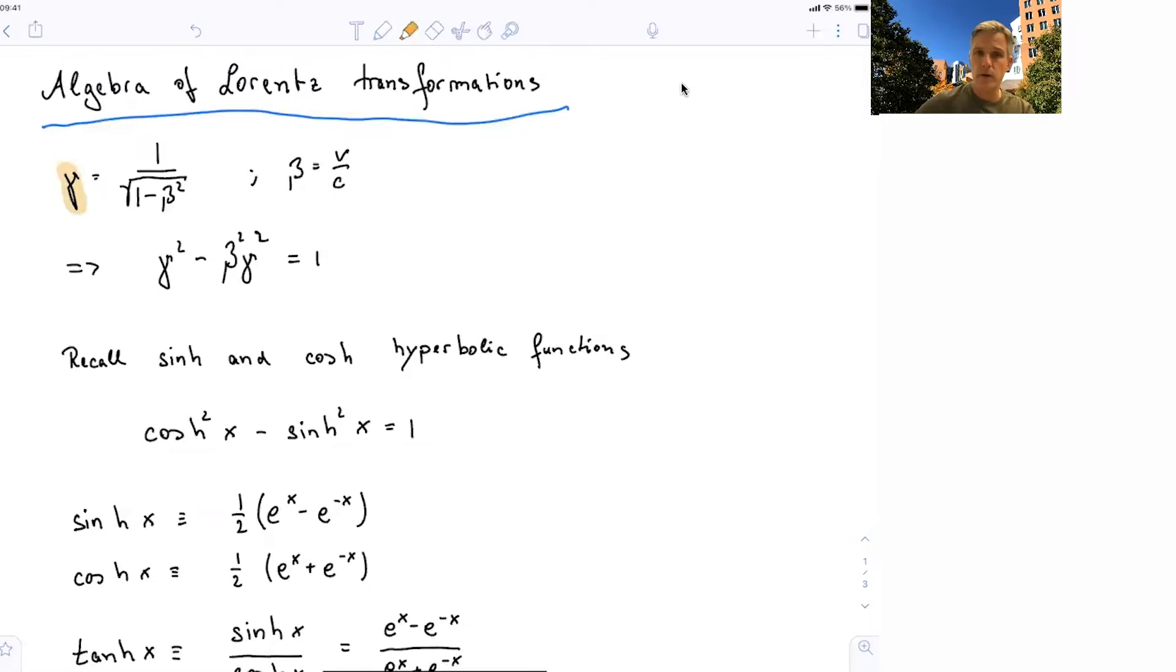Now I would like you to recall hyperbolic functions, sinh and cosh. Cosh squared minus sinh squared is equal to 1. So the form here and here are pretty much the same. Something squared minus something else squared equal to 1.